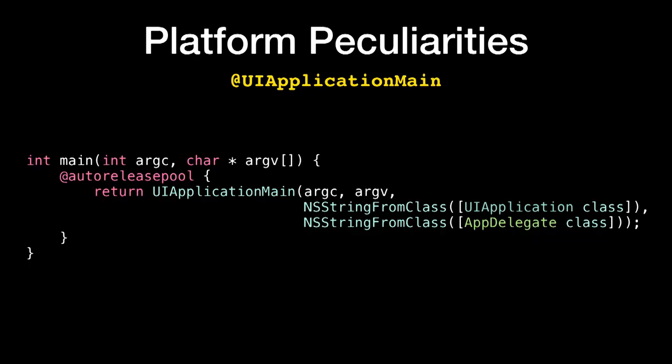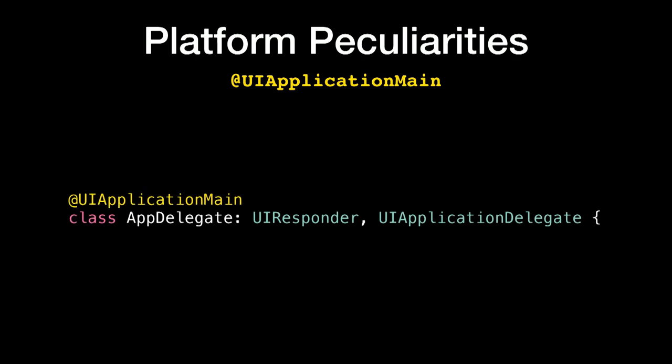In Objective-C, every app has a main.m file containing something like this: it takes the command line arguments, makes an autorelease pool, calls UIApplicationMain, and you give it the name of two classes — a UIApplication class for connecting to the window server, and the AppDelegate class. In Swift, they've replaced this with an attribute. All you have to do is tag @UIApplicationMain onto your AppDelegate class, and it will automatically generate that boilerplate for you, and it gives Apple a hook in the future to add things to the bootstrap if they want to.